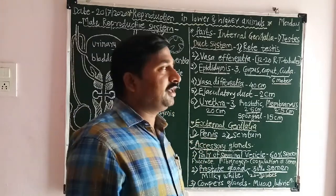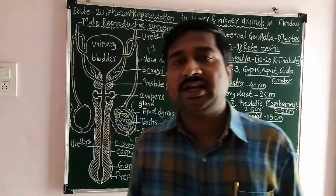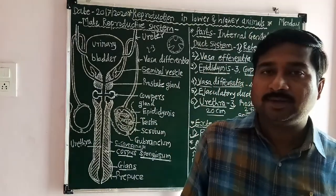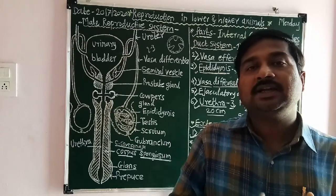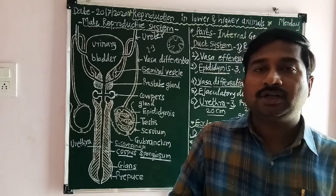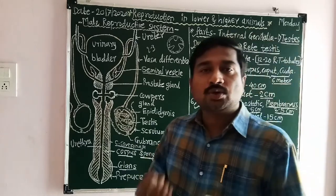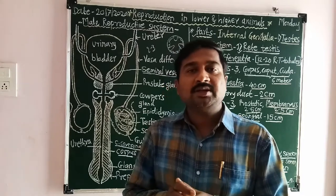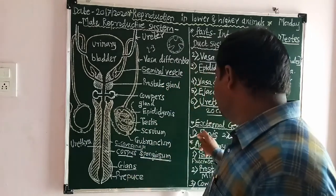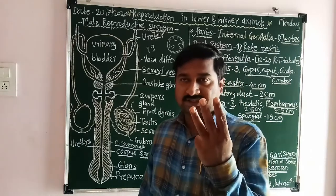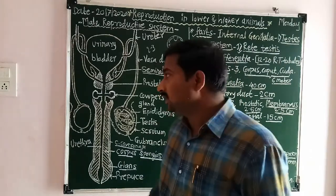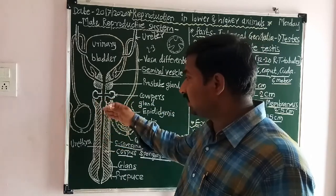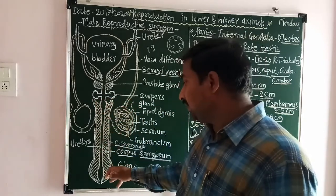The penis is called the main copulatory organ in the male reproductive system. It plays an important role in sexual intercourse or the copulation process, and due to that it is called the main copulatory organ or main external genital organ.